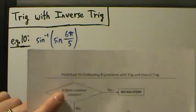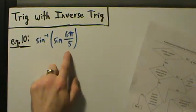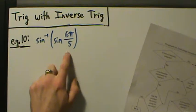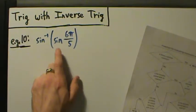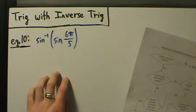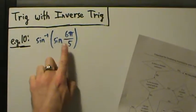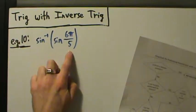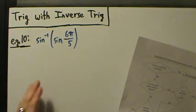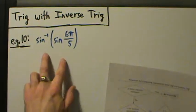With the flowchart, start up here. Is there a domain violation? No, there's not, because we can take the sine of anything we want. The domain of the sine function is all real numbers, so it's okay to take the sine of 6π over 5. And when we take the sine of something, we're going to get some value that's okay to put back into the inverse sine, because it came from the sine function. So just by definition of inverse, it's going to be okay. So no, there are no domain violations.